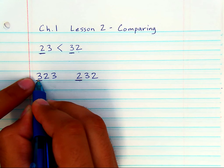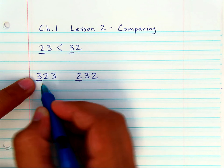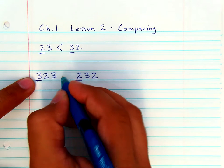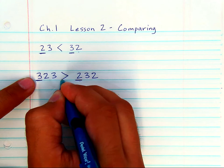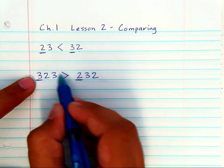So, 323 is larger than 232. So, we will write the symbol so that the alligator is eating the larger number.